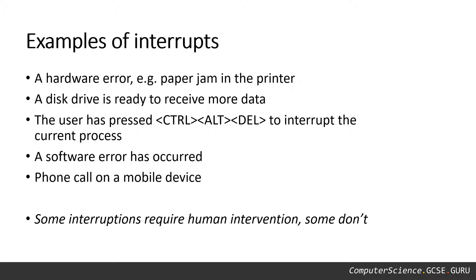Let's take a look at some examples of interrupts. The first example could be a hardware error, such as a paper jam in a printer. A disk drive being ready to receive more data. Maybe the user has pressed Ctrl-Alt-Delete to interrupt the current process manually. Maybe a software error has occurred, or maybe if you're using a smartphone, you're receiving a call on your device.